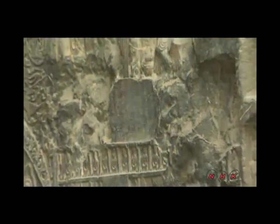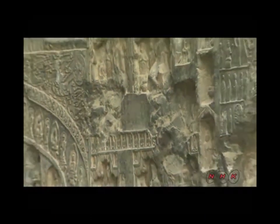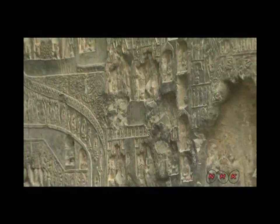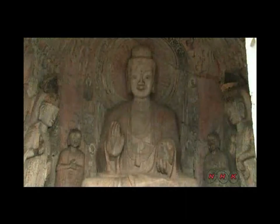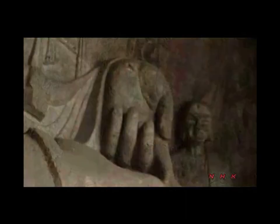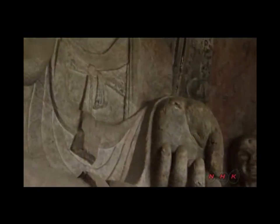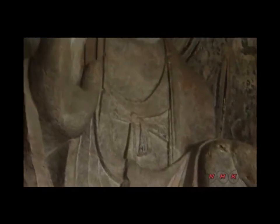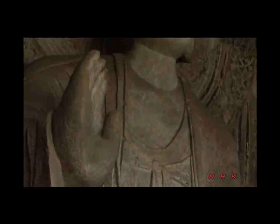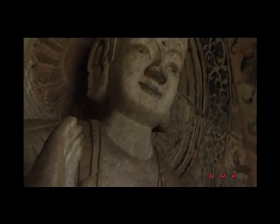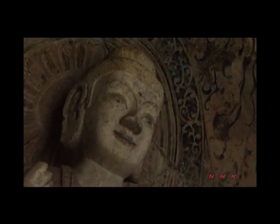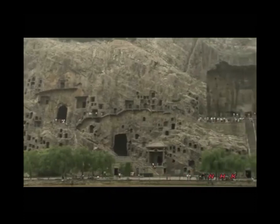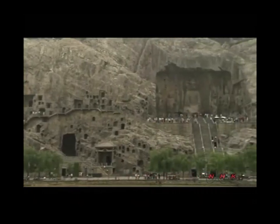Inscriptions on the wall around each Buddha statue explain why it was carved. During the early period, they were mainly carved for individuals, then state carvings began. This seated Buddha statue was commissioned by Xuanwu, the 7th emperor of the Northern Wei dynasty. The statue is made to resemble his father, Xiaowen. Buddhism was the national religion of the Northern Wei dynasty, and its emperor was regarded as a reincarnation of Buddha. Hardly any new grottos were made after the fall of the dynasty in the middle of the 6th century.